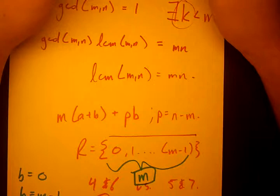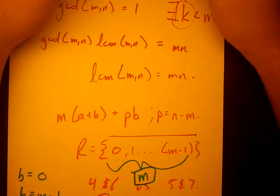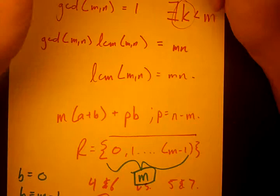So far we've proven that we cannot have a Frobenius number if GCD MN does not equal 1. So, let's prove now that we do have a Frobenius number if GCD MN does equal 1.